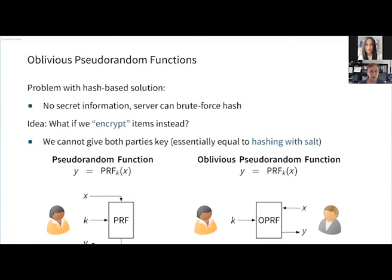What we actually want is a slightly different, related primitive: an oblivious pseudorandom function. This is a two-party protocol where one party, Alice on the left, inputs the secret key k, and the other party, Bob on the right, inputs his item. Bob gets the result, but importantly Bob never learns anything about the secret key k, and Alice never learns anything about the input item x. This essentially allows us to give only one party the secret key and let the other party evaluate items using the oblivious pseudorandom function.